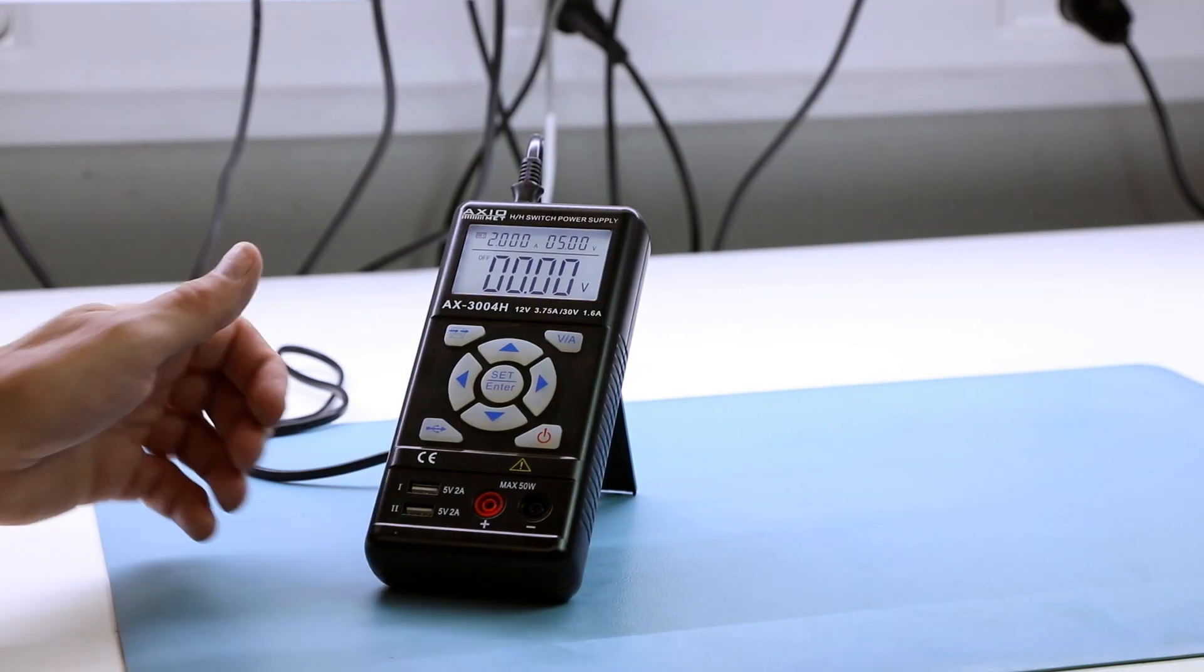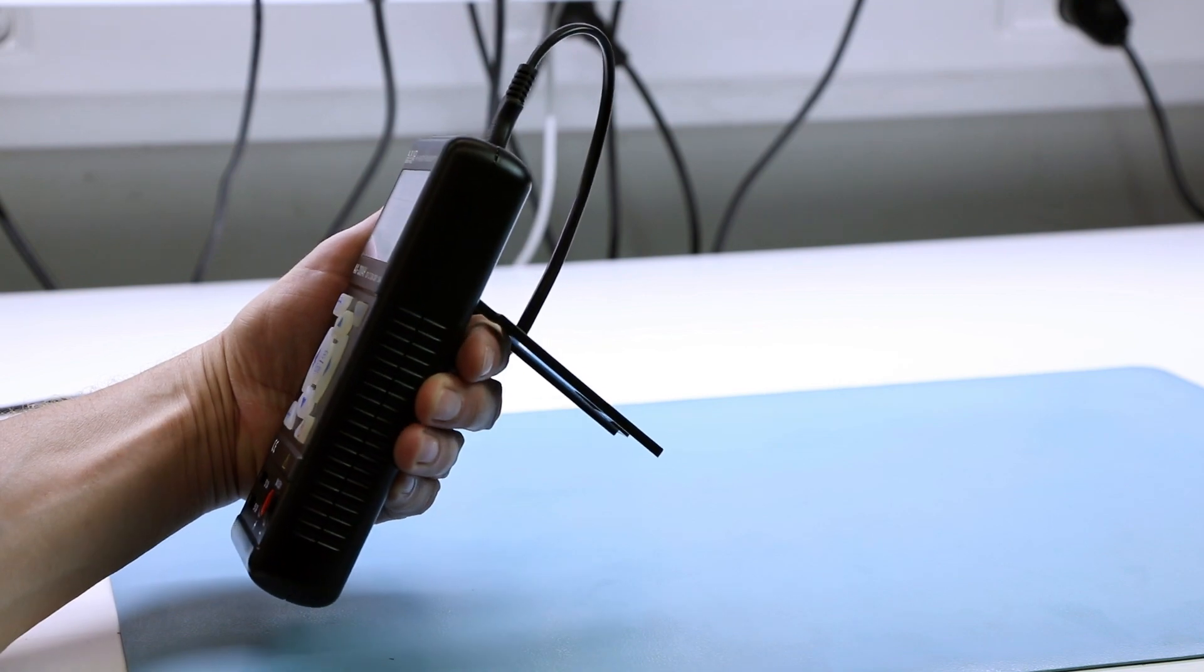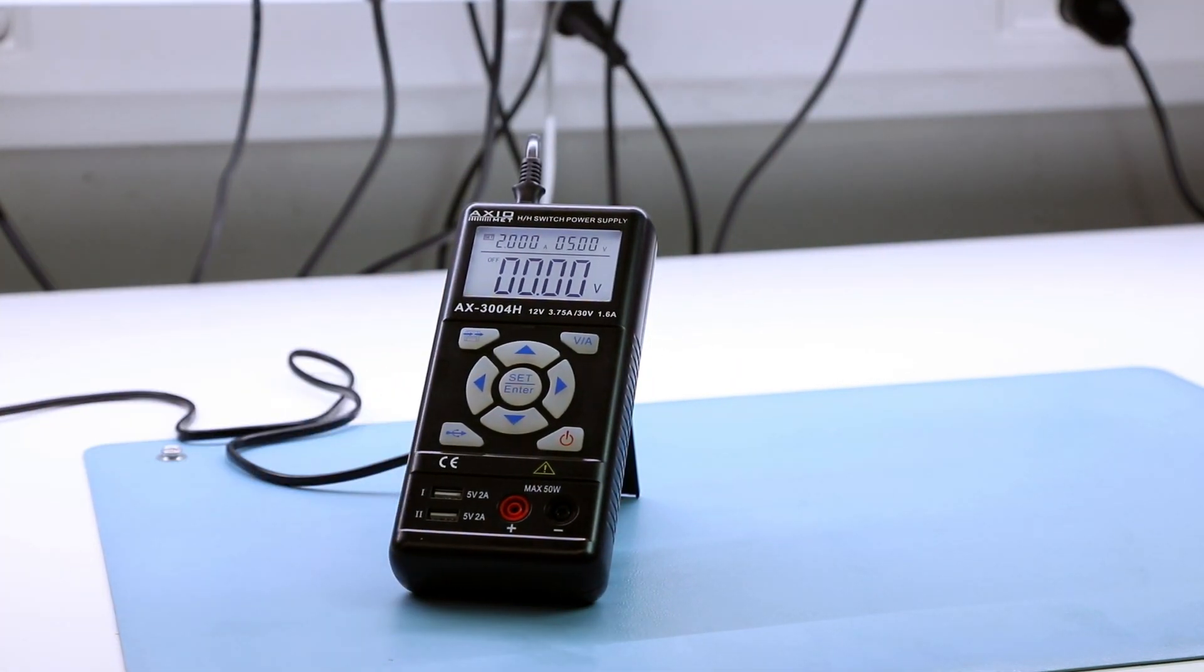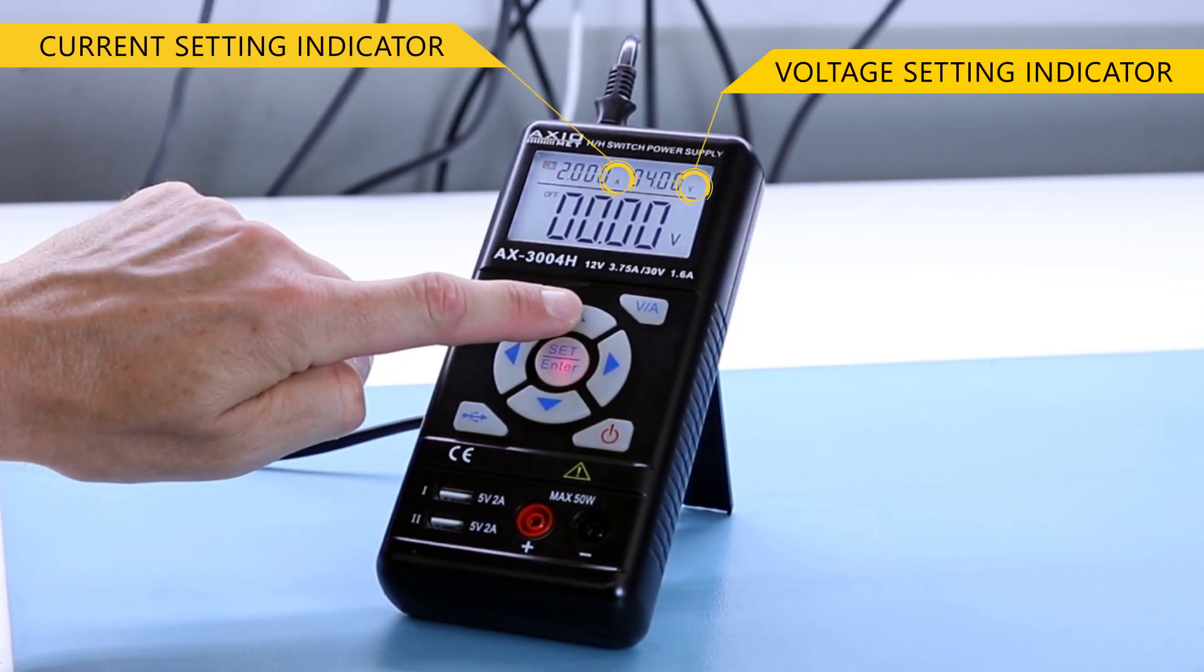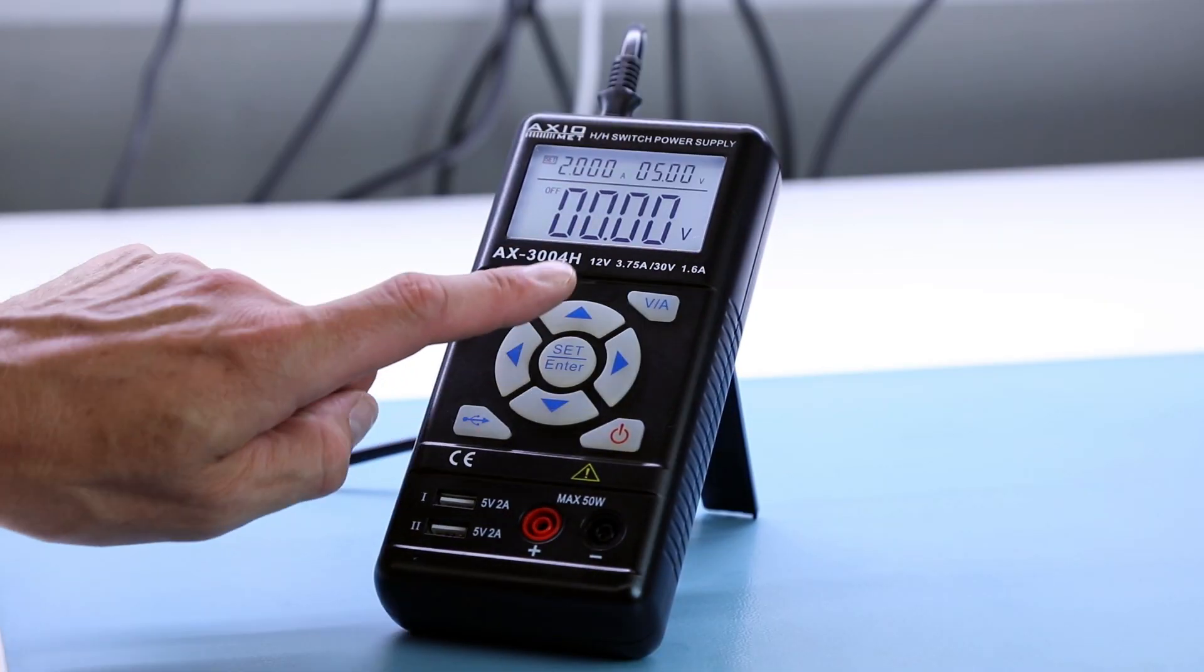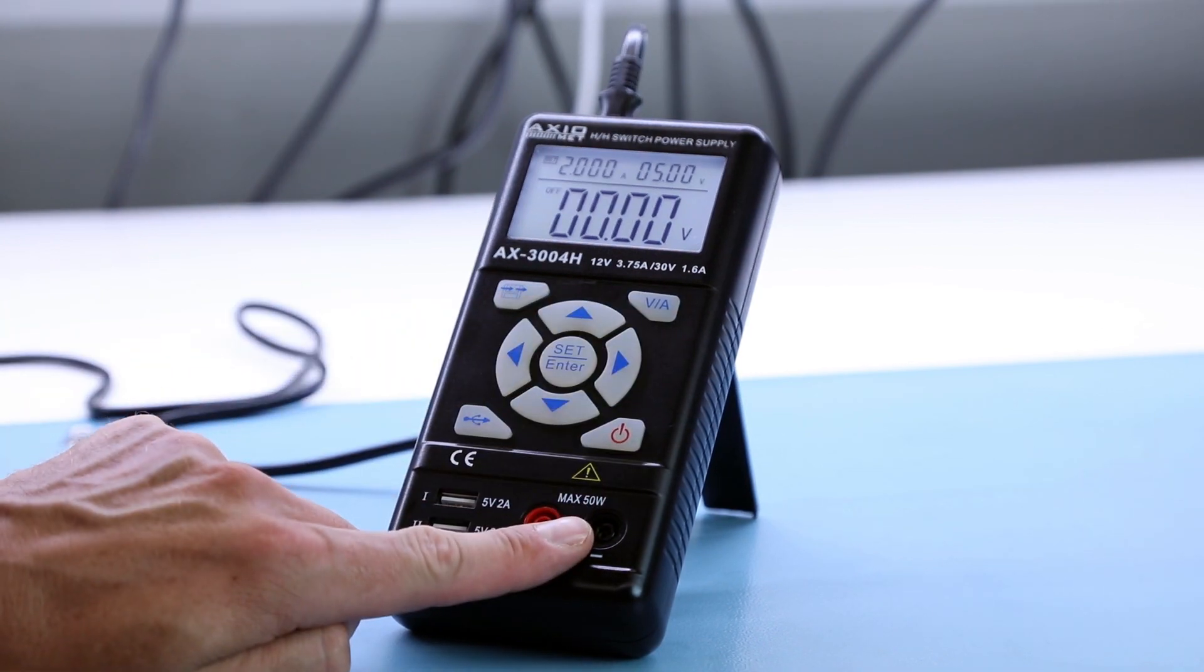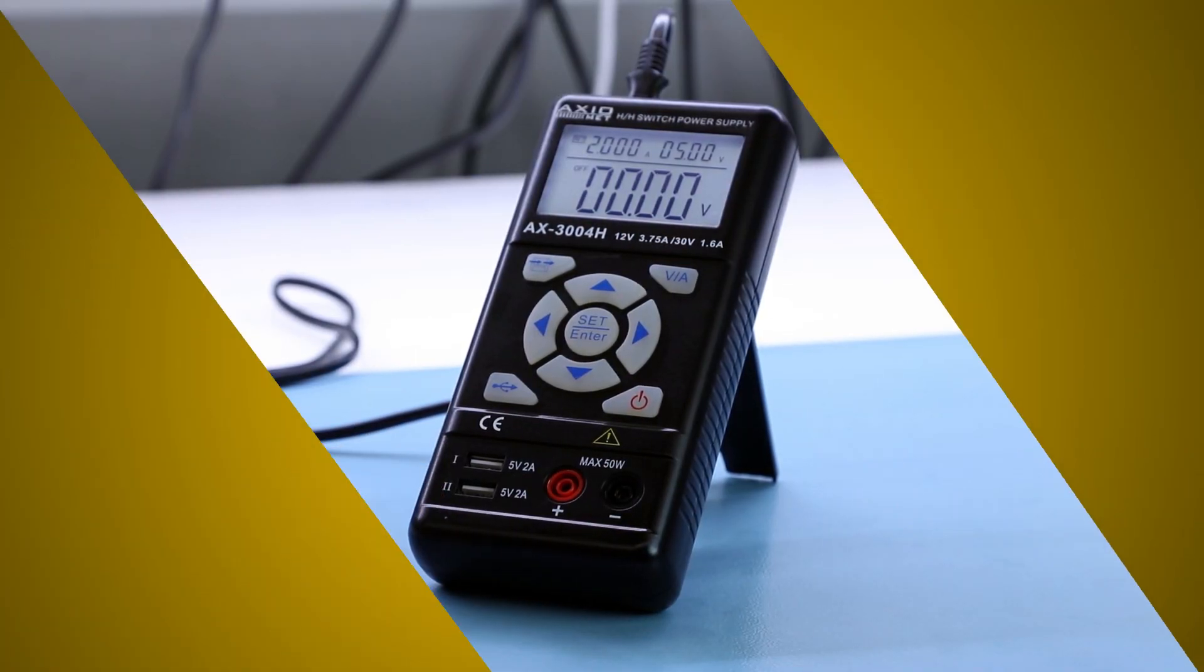The AX3004H is an innovative handheld DC switch mode power supply in a classic multimeter dimension housing. It is a single output power supply with digital current and voltage regulation, maximum voltage of 30 volts and current of 3.75 amps, maximum output power of 50 watts and two USB ports.